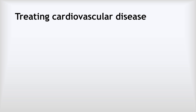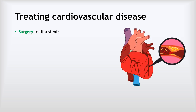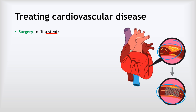How do we treat cardiovascular disease? One option is surgery to fit a stent. With a heart attack being caused by a blockage in one of the coronary arteries on the surface of the heart, a stent — a mesh tube — is inserted into that blocked artery to open it up and allow blood to start flowing again. The good thing about a stent is that it is an immediate fix. The downside is that all major surgery carries risks and side effects, and there is the potential to die during surgery as well.